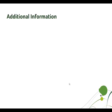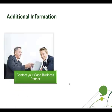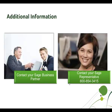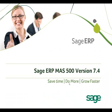If you'd like additional information on these improvements or any of the other improvements in version 7.4, contact your Sage business partner or contact your Sage representative at 800-854-3415. Sage ERP MAS 500 Version 7.4 — Save time. Do more. Grow faster.